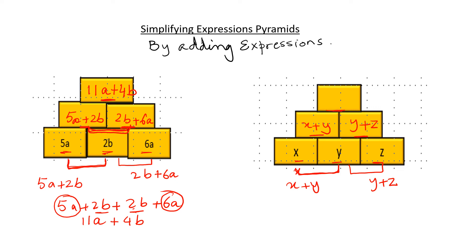Now in order to fill the top one, I will add two expressions here. So x plus y plus y plus z. Y and y are like terms because it is 1y plus 1y. The coefficient is 1. It is invisible.